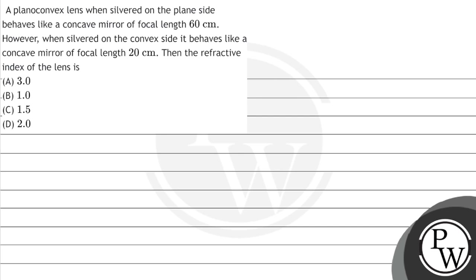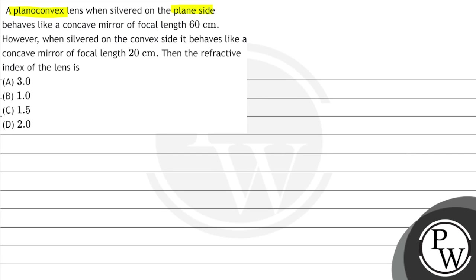Let's read the question. A plano-convex lens silvered on the plane side behaves like a concave mirror of focal length 60 cm. However, when silvered on the convex side, it behaves like a concave mirror of focal length 20 cm. Find the refractive index of the lens.